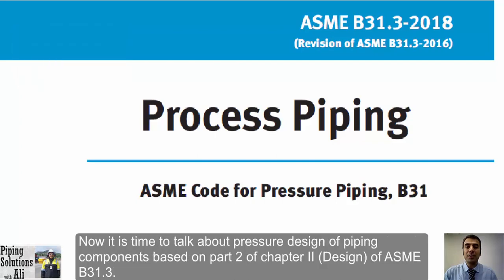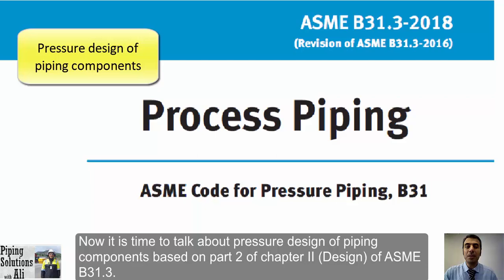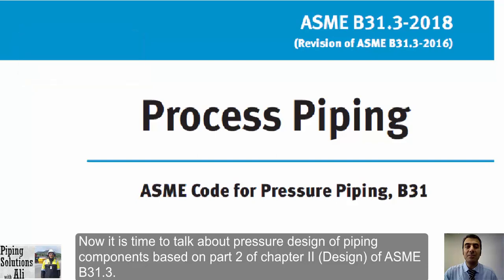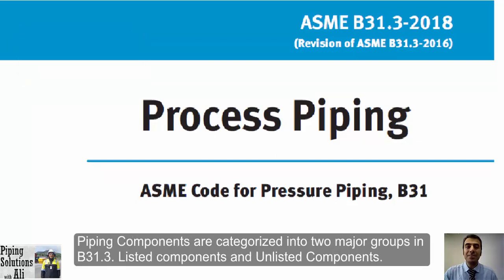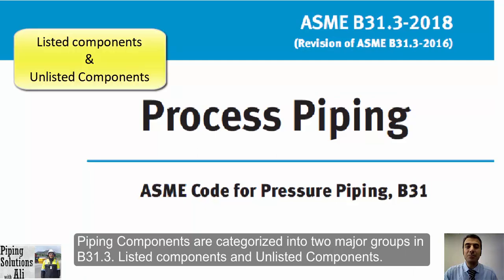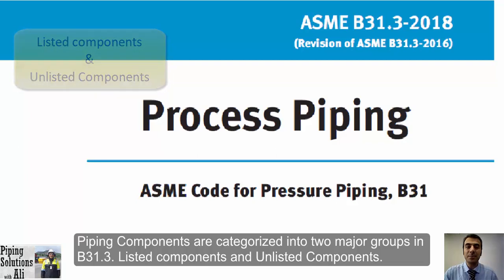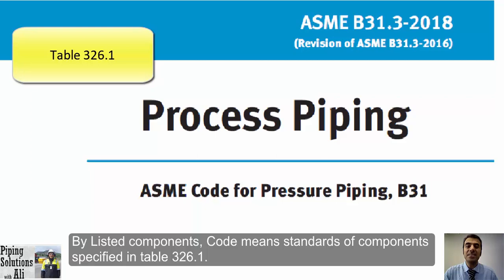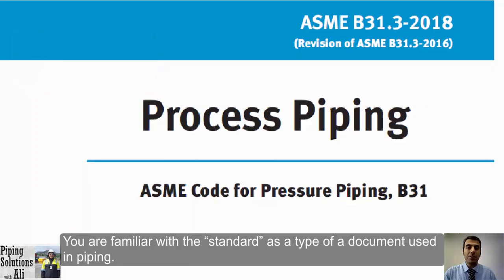Now it's time to talk about pressure design of piping components based on Part 2 of Chapter 2 of ASME B31.3. Piping components are categorized into two major groups in B31.3: listed components and unlisted components. By listed components, the code means standards and components specified in Table 326.1.